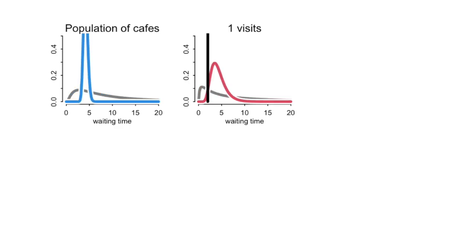The golem visits cafe alpha for the first time and gets its coffee in about two minutes. This is just one visit, and it updates using Bayesian updating. It gets a new posterior distribution for cafe alpha — the red curve — and the population of cafes has also changed. The blue curve is now spiked at what the golem thinks cafe alpha's average waiting time is. After only one visit, this will be easily overwhelmed by future data.